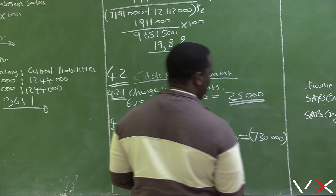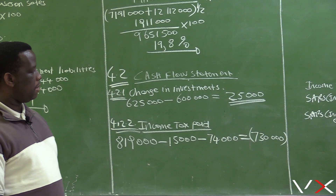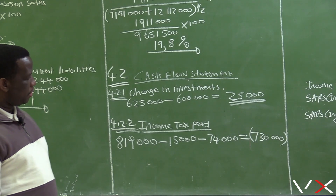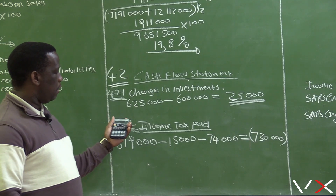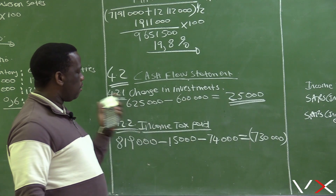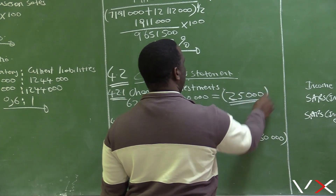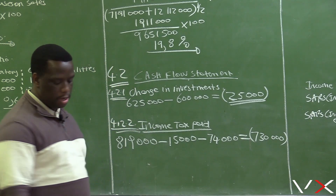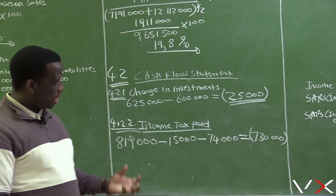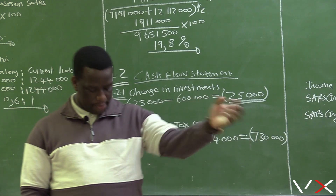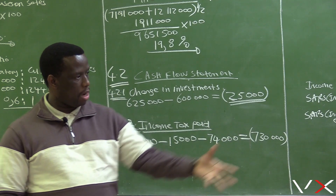When this 730,000 goes to the cash flow statement, it must be put in brackets because it is an outflow of cash. Similarly, the change in investment of 25,000 is an outflow because we increased our investment from 600,000 to 625,000 — we are taking money from the bank and investing it. When we take back investments, that will be an inflow of cash.